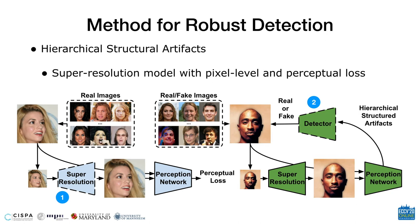In detail, we propose a simple and effective method. Our method is based on training a super-resolution model, which aims to fit and reconstruct real images better than fake ones. The super-resolution model is only trained with real images, and therefore the reconstruction errors have different distributions in regions and local structures. Besides, the super-resolution model is trained with perceptual loss, which provides measurements on different levels of visual properties. Finally, we take the reconstruction maps at different stages as input features to train classifiers for classification.